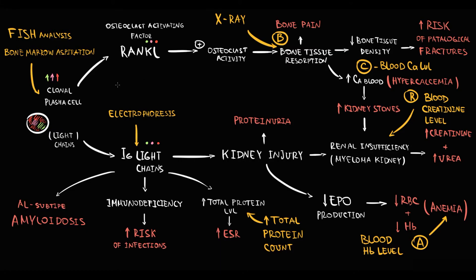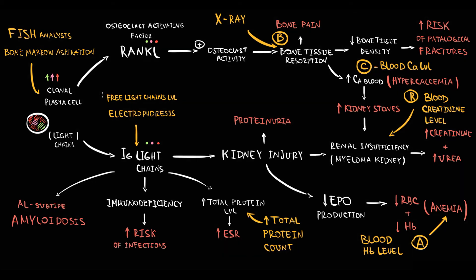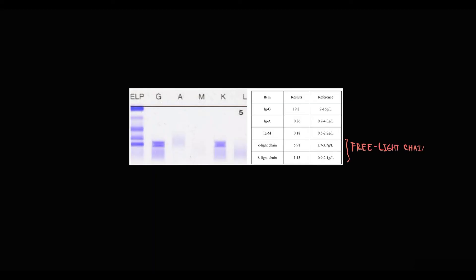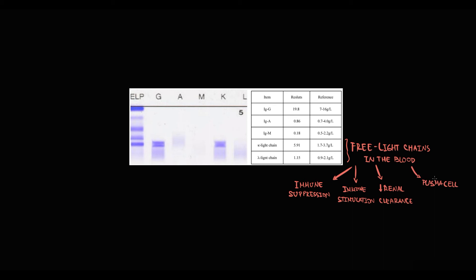We can also measure the amount of light chains in the blood. In Bence Jones multiple myeloma, where clonal plasma cells produce a huge amount of light chains, the serum free light chains level is greatly elevated. The criteria for multiple myeloma is free light chains greater than 100 mg/L. However, increasing free light chain concentration may result from a number of clinical situations, including immune suppression, immune stimulation, reduced renal clearance, or monoclonal plasma cell proliferative disorders.